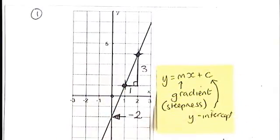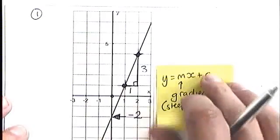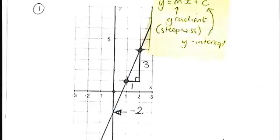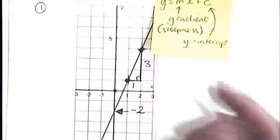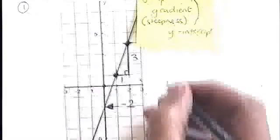I'm going to mark those on there, three and one. Let's just get this stick out of the way. There we go. So I've got this gradient triangle with a three and a one.